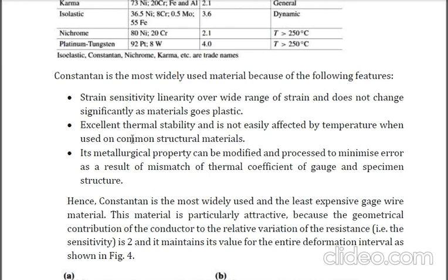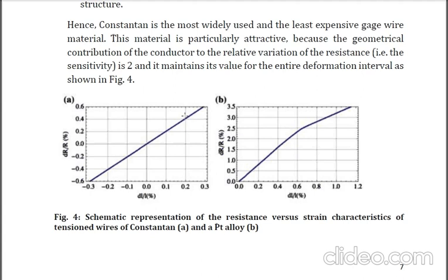Constantan also has excellent thermal stability, meaning it is not much affected by temperature. Lastly, its metallurgical properties can be modified and processed to minimize error — meaning the material property should be as close as possible to that of the component on which it measures deformation, to reduce differences in thermal coefficients between the gauge and the base material. The diagram shows Constantan compared to Platinum. For Constantan, the plot shows it can be used over a range of up to 15% strain, or 150,000 micro strain. Whereas for Platinum, the curve is changing, meaning the linearity changes, and you would have to account for that changing linearity if using it.